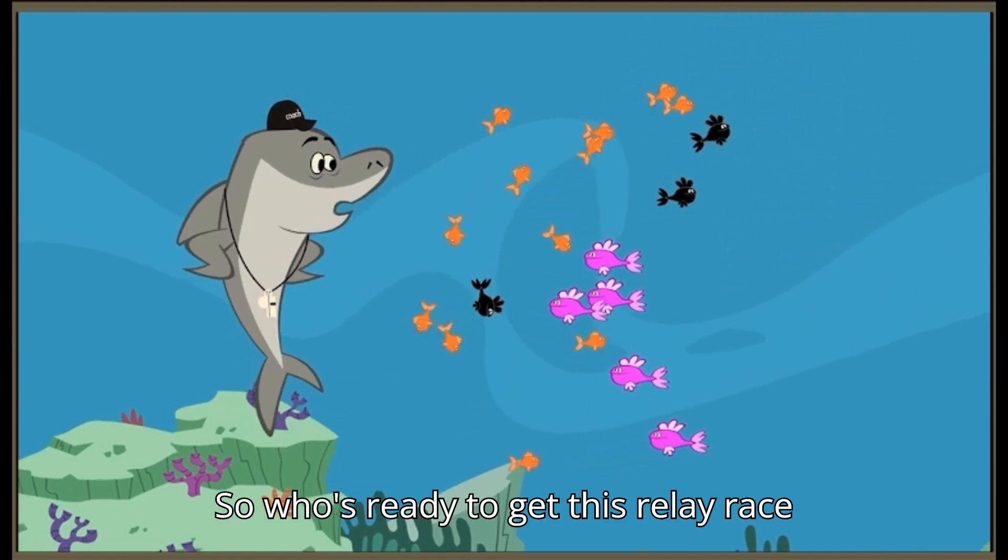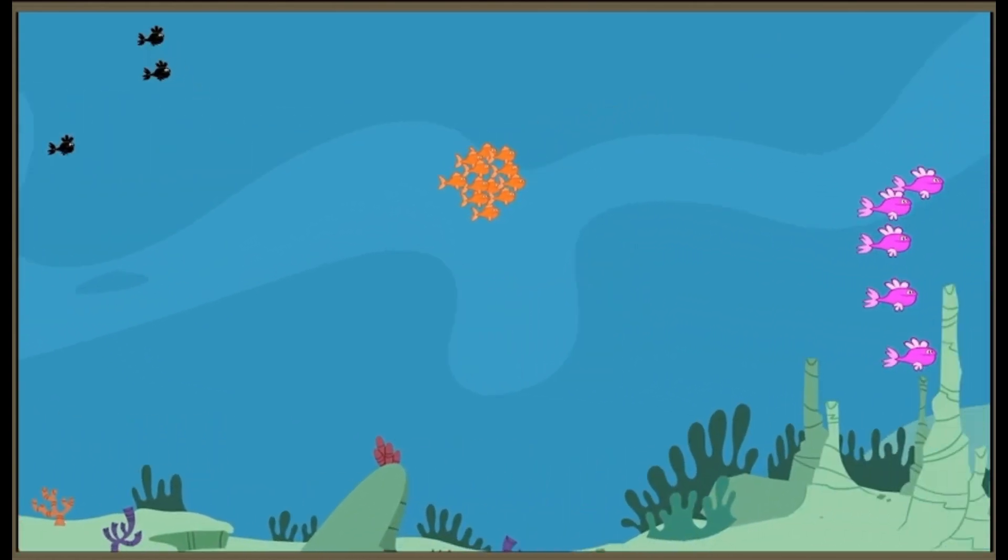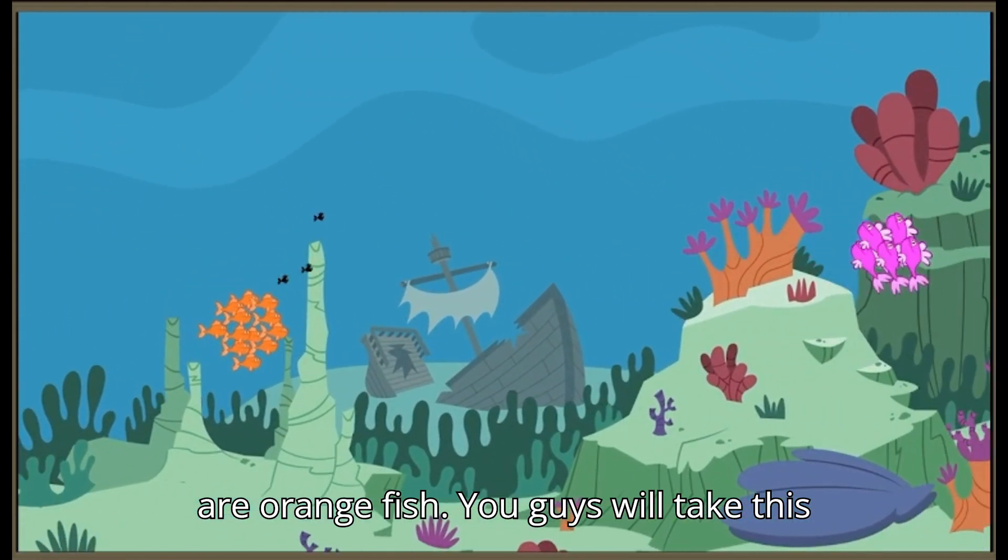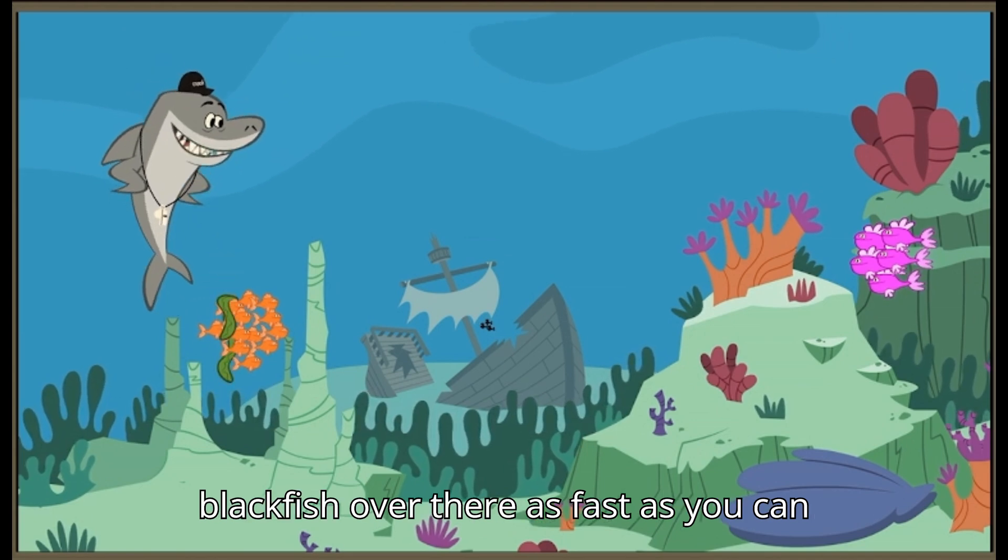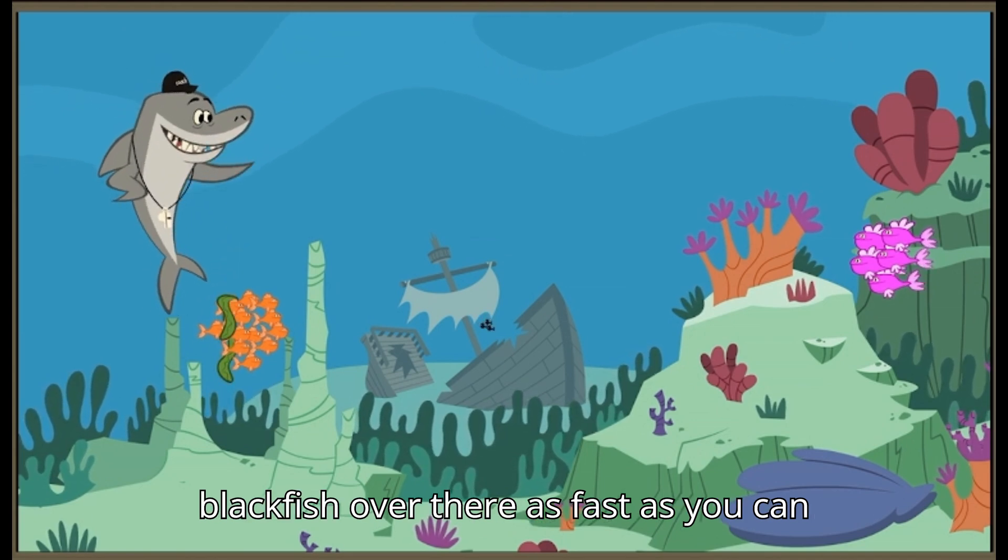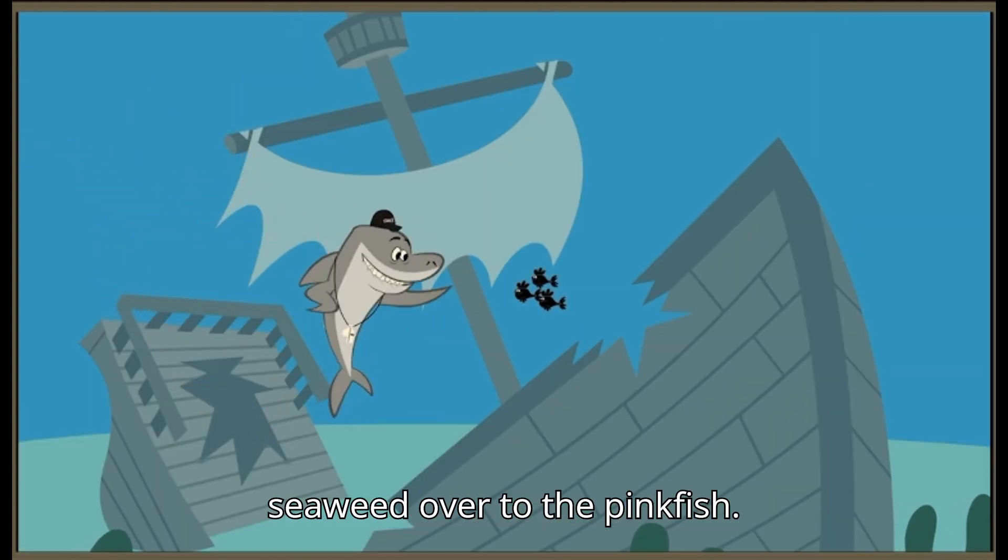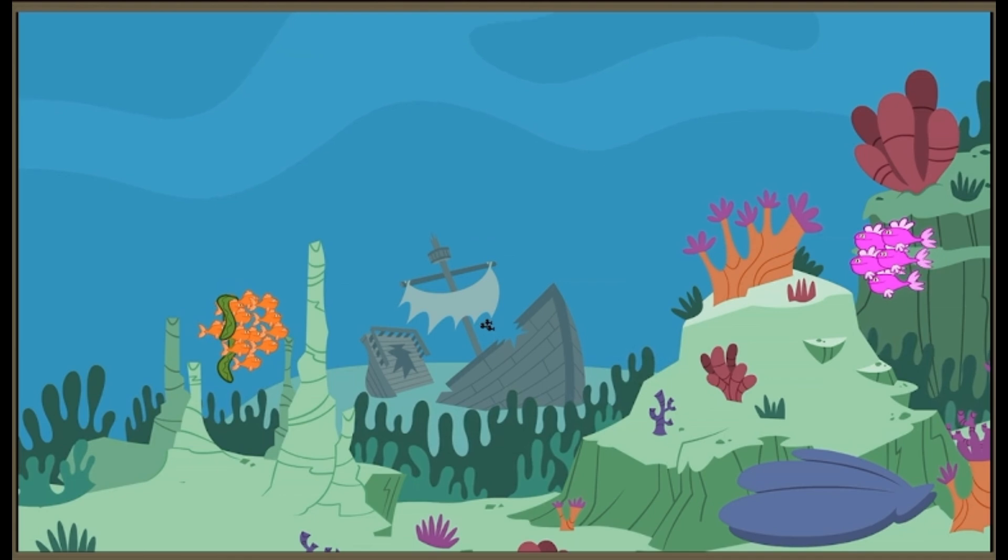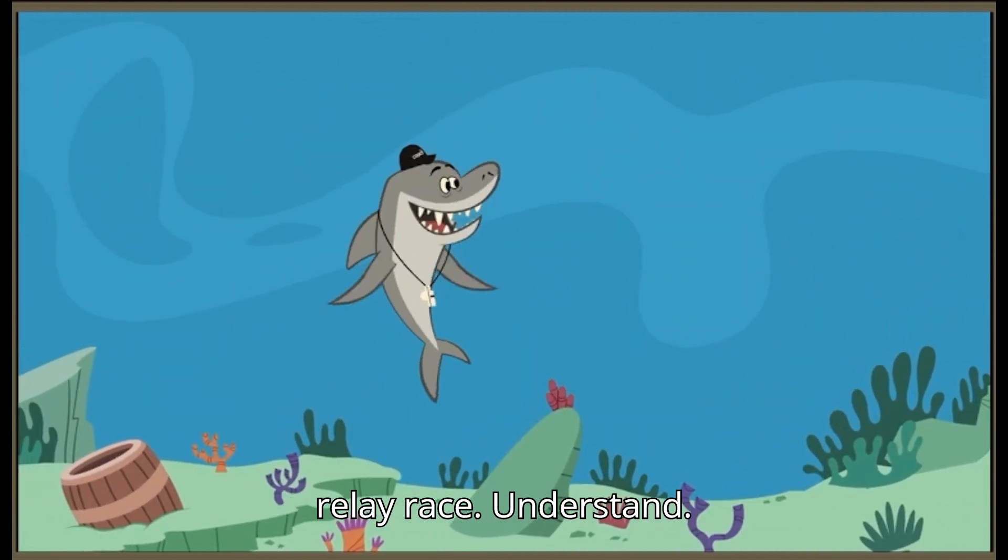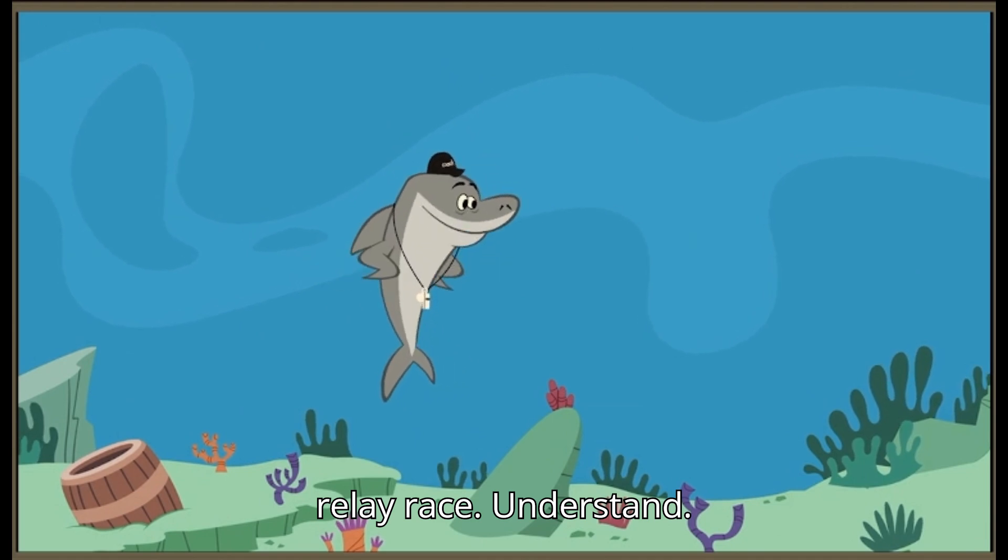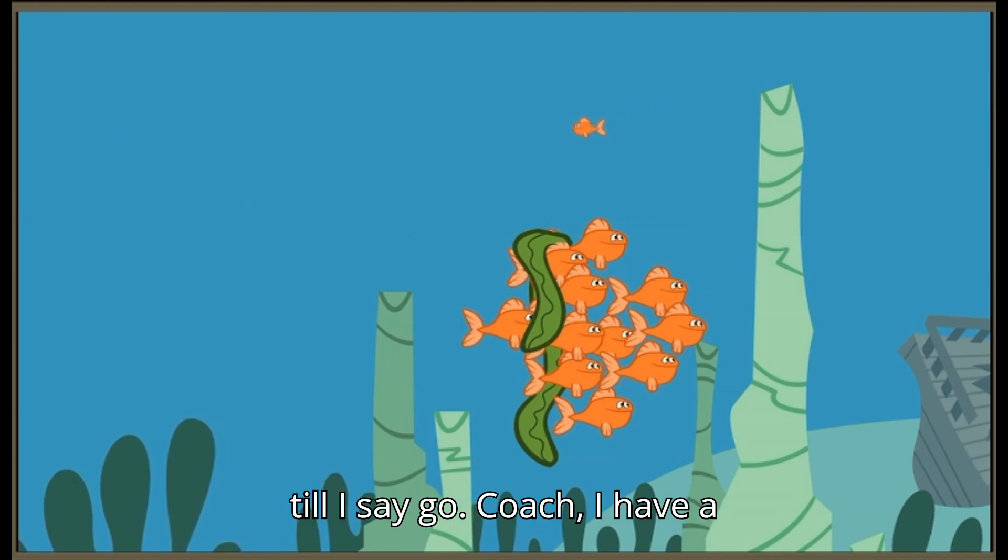So, who's ready to get this relay race started? We are! Orangefish, you guys will take this piece of seaweed and pass it along to the blackfish over there as fast as you can. Then, blackfish, you get the seaweed over to the pinkfish. Pinkfish, you'll take the seaweed and bring it to this rock here. That's a relay race. Understand? Got it! Hey, Zippy. Wait till I say go.